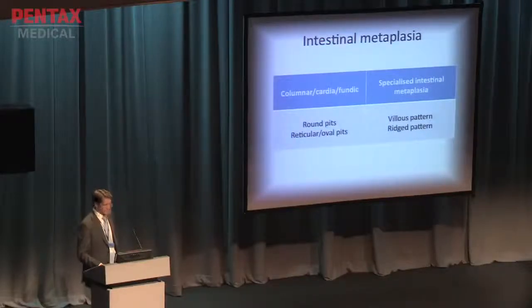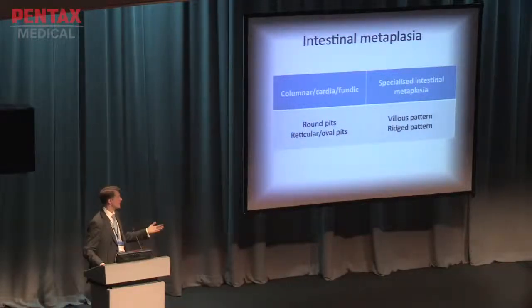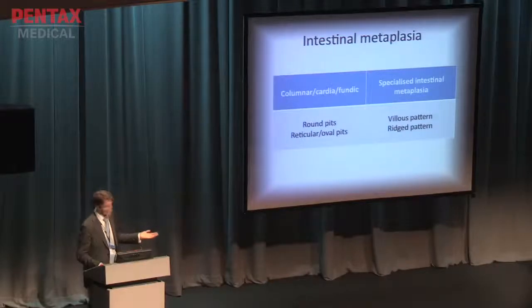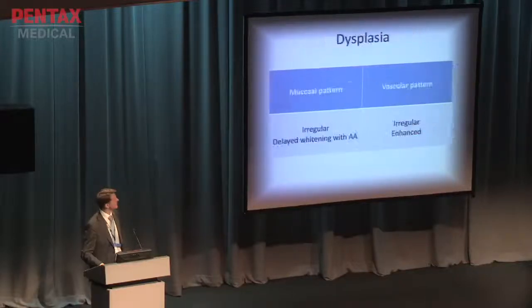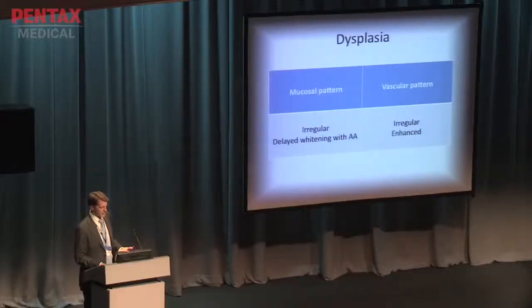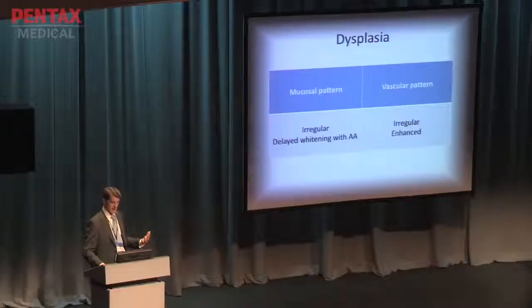For classification, I use a simple system: if pits are round or reticular, it's likely cardiac or fundic; if villus or ridge pattern, it's more likely to be SIM. For dysplasia, look for irregular mucosal pattern and delayed widening of acetic acid whitening. For vascular pattern, look for enhanced vasculature and irregular vasculature.